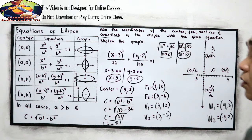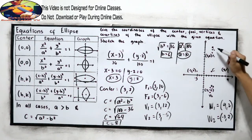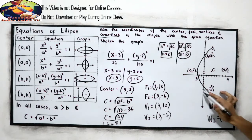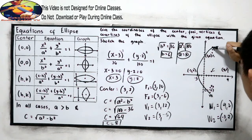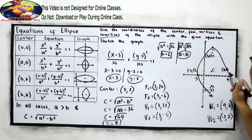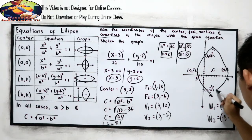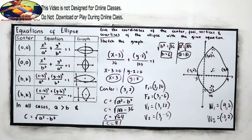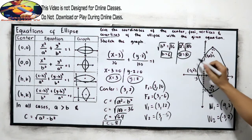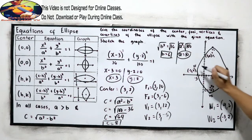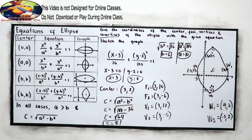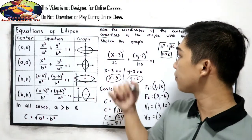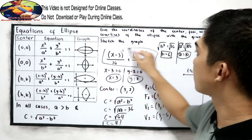Now we are ready to connect our vertices. Connecting our vertices — so this will be our ellipse, from V1 to V2, then W sub 2 to W sub 1. That's how to get the center, foci, vertices, and co-vertices when the given equation is at center (h,k).